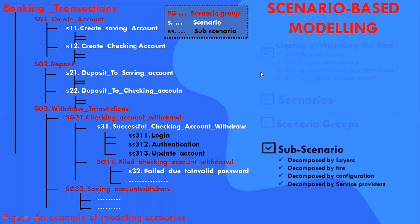Sub-scenarios are represented with black color. Scenarios may share some functionalities provided by commonly used software components — for example, authentication is required for all banking transactions. Sub-scenarios decompose a scenario into relatively independent functional parts. For example, scenario S3-1 is decomposed into sub-scenarios S3-1-1, S3-1-2, and S3-1-3. Sub-scenarios are identified with insight into system high-level designs, such as decomposed by layers, decomposed by tiers, decomposed by configuration, and decomposed by service providers.